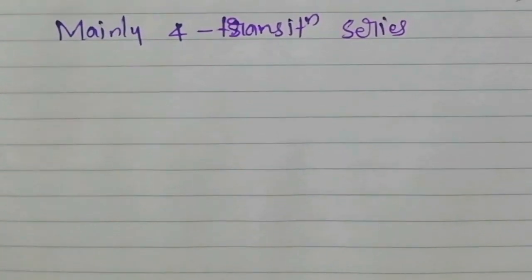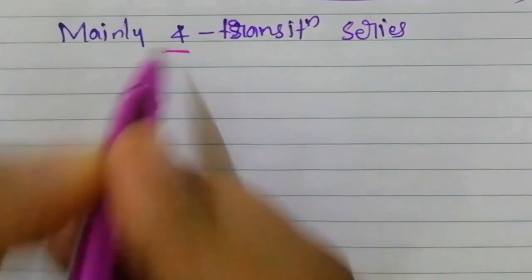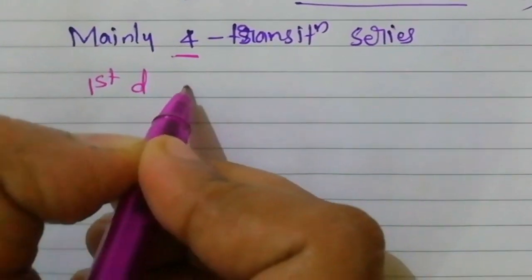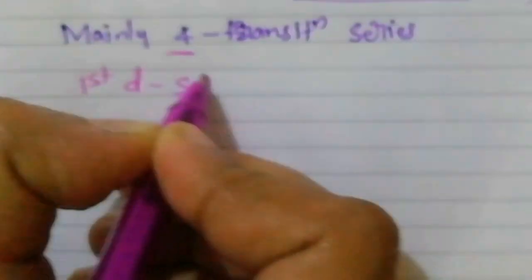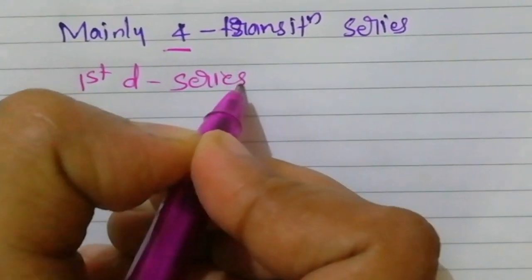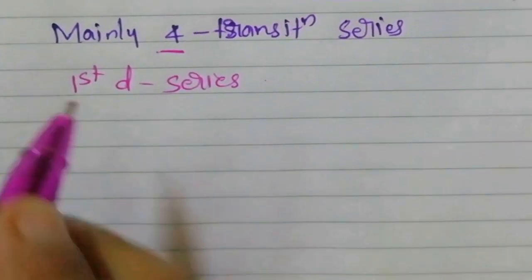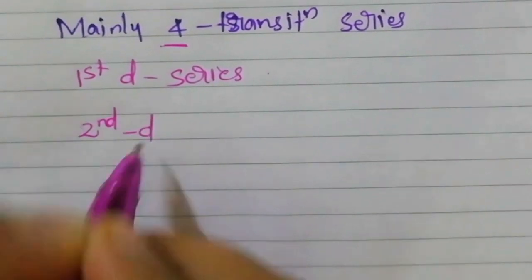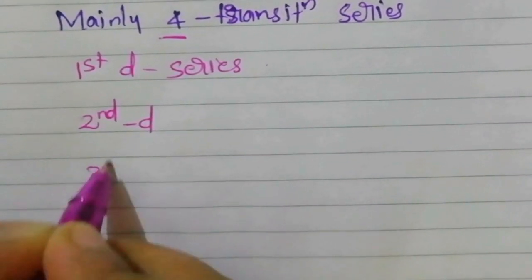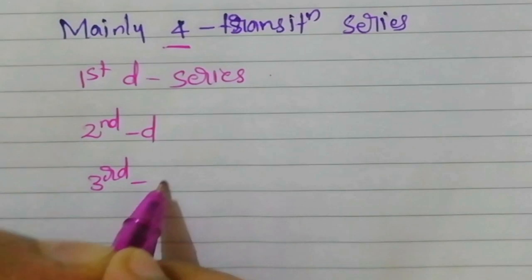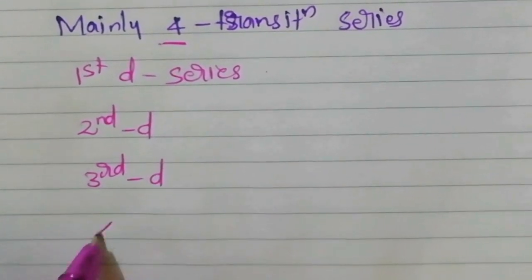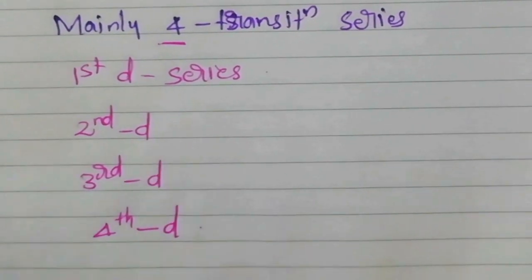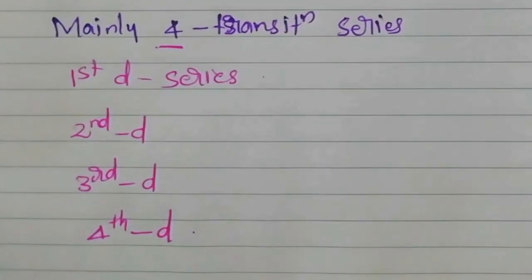There will mainly be 4 transition series. How do we define these series? Based on the 4 horizontal rows. So the first row is called the first D series or first transition series, the second is the second D series or second transition series, then the third D series, then the fourth — mainly 4 horizontal rows are there in the D block.